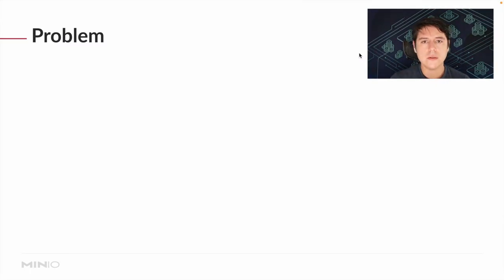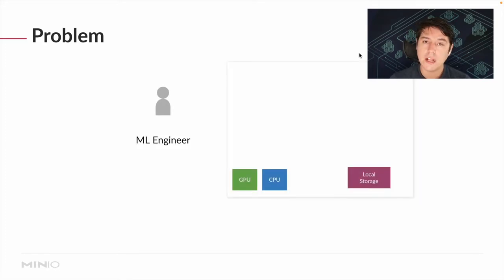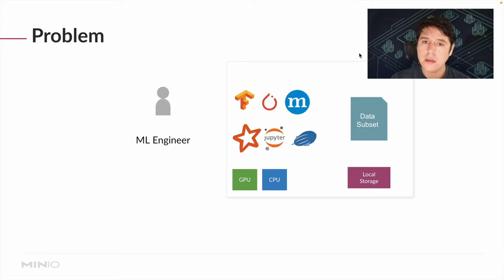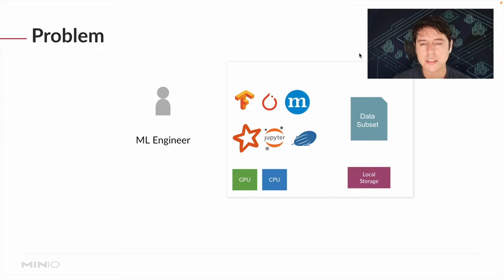Traditionally, you have a machine learning engineer with some really fancy machines — some nice CPUs, local storage, and sometimes even GPUs to speed up training, depending on whether they're doing traditional machine learning or deep learning. They often can't fit the whole dataset onto the machine, so they take a subset of the data. They pick the framework of their choice — TensorFlow, MXNet, PyTorch — and work perhaps on a Jupyter notebook or a Zeppelin notebook. This encourages interactive building of the application, which still resembles a lot of traditional application development.